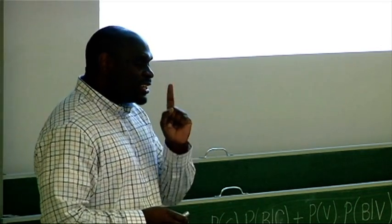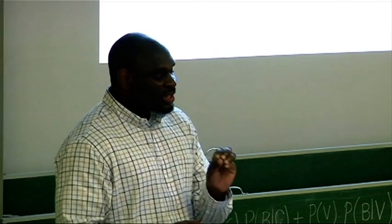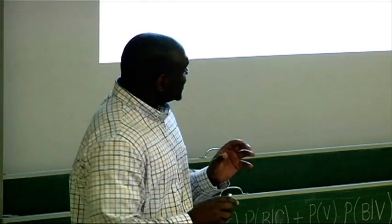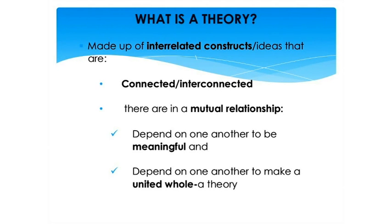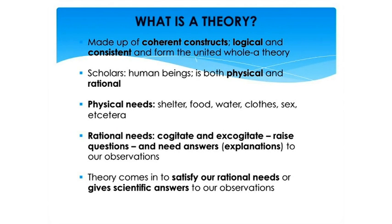A theory is made up of interrelated constructs, or rather ideas. These constructs are connected and interconnected, meaning there is a mutual relationship between them. The constructs in the theory depend on one another to be meaningful. On their own, they do not make a theory — they depend on each other to make a united whole, and this united whole is a theory. A theory is made up of constructs that are coherent, meaning they are logical, consistent, and form the united whole theory.